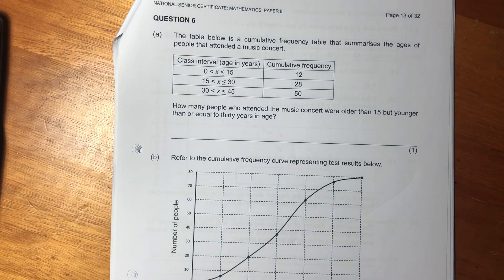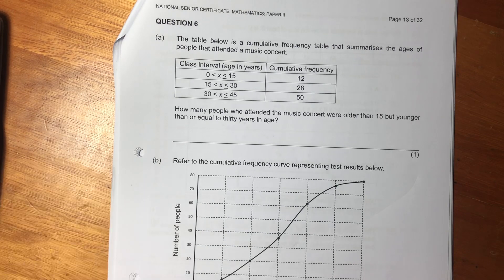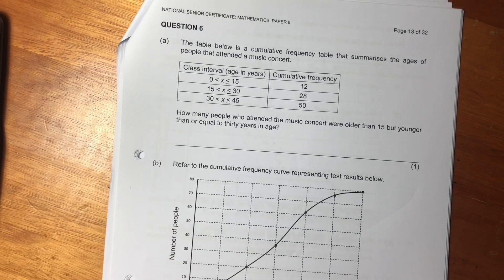Hey, question six. Let's do this thing. We're moving on to stats. The table below is a cumulative frequency table that summarizes the ages of people that attended a music concert.